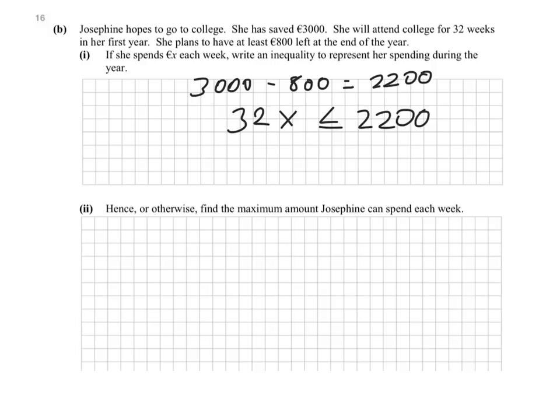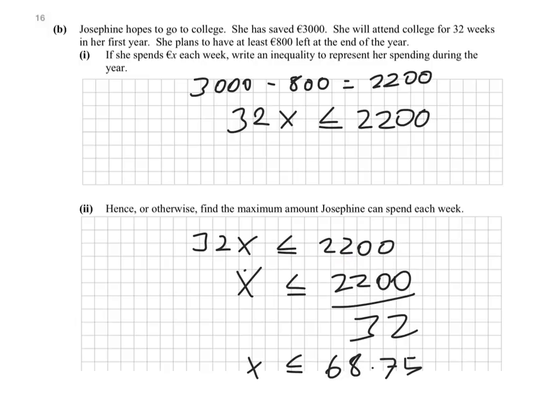So let's go ahead and rewrite that answer. 32x is less than or equal to 2,200. And the question wants us to find out the maximum amount Josephine can spend each week. So that's the maximum per year, but per week would be the x amount here. So we simply, that's basically asking us to do is solve this inequality. Find out what x must be less than or equal to. So we take the 32 here, which is multiplying by x. We bring it across and divide it into 2,200. Because here we were multiplying, here we're going to divide.